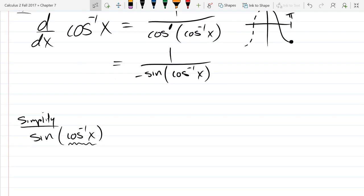So cosine inverse x is actually going to be an angle, because it's going to output an angle. A cosine inverse is going to output an angle.